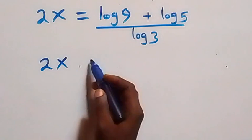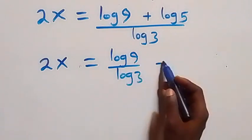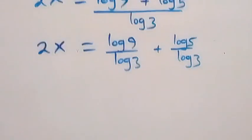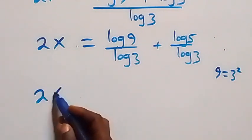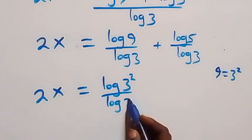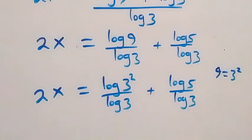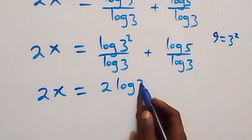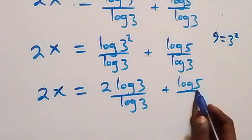From here we can express 9 as 3 times 3, which is 3 squared. So we have 2x equals log 3 squared over log 3, then plus log 5 over log 3. This gives us 2x equals log 3 squared over log 3 plus log 5 over log 3.